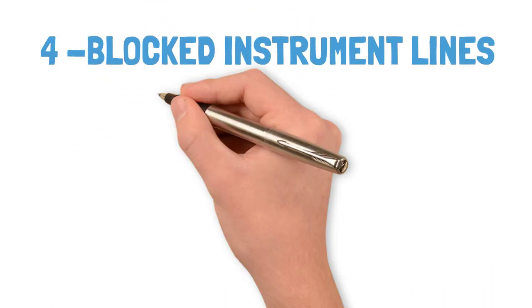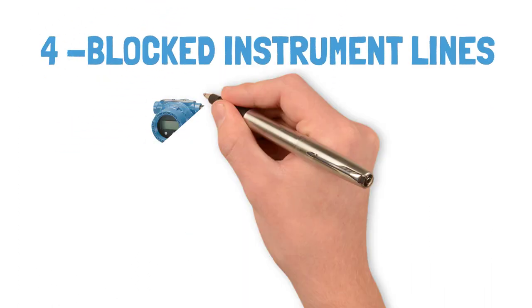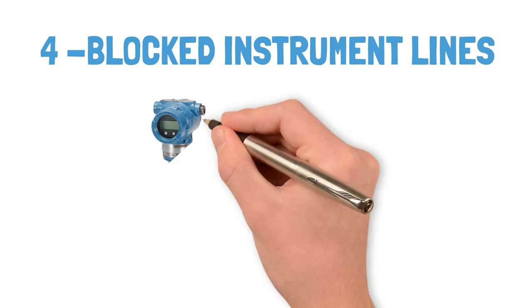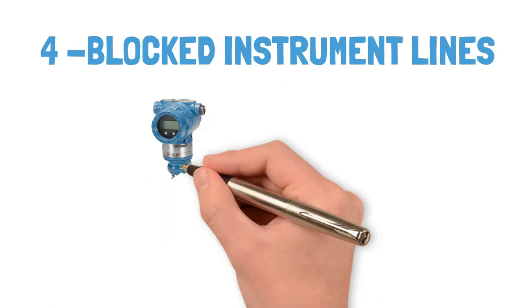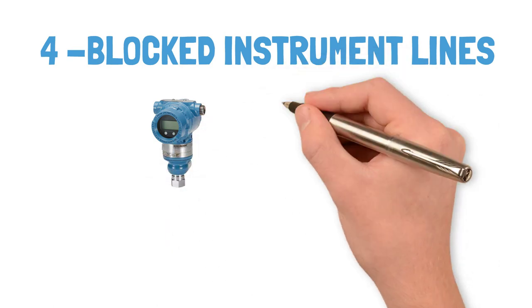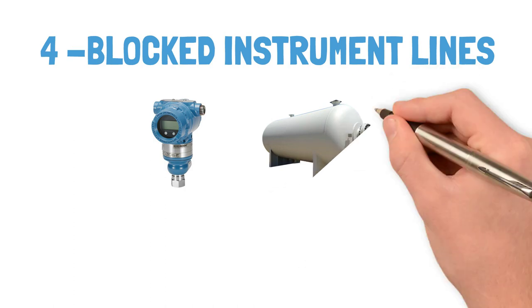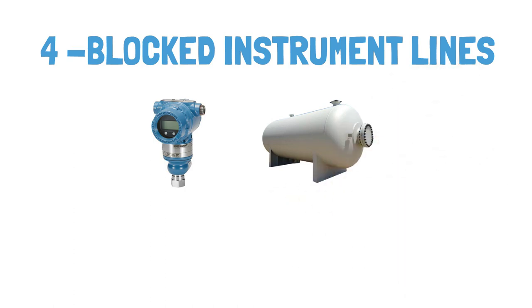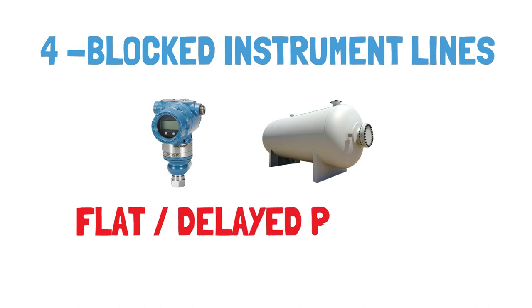Blocked instrument impulse lines. If there is any blockage between the instrument and the process it is measuring, this could cause flat or delayed readings. This will depend on the type of instrument you are working on, but always keep in mind this failure mode, especially on liquid processes that might contain particulates.